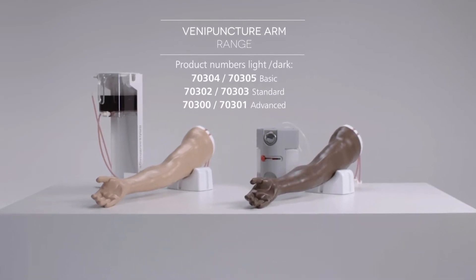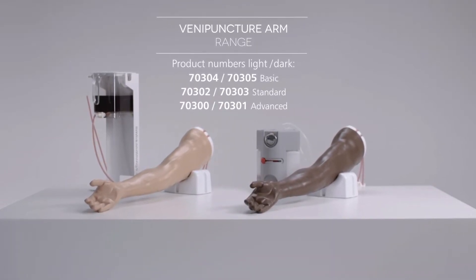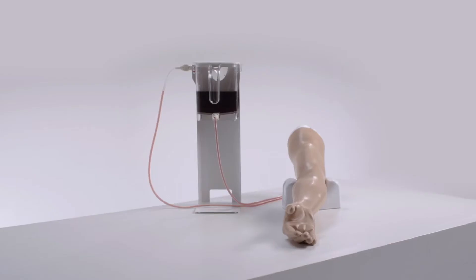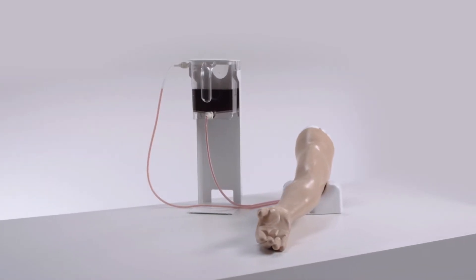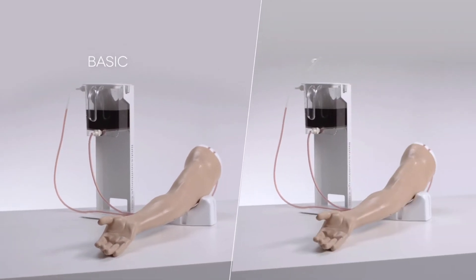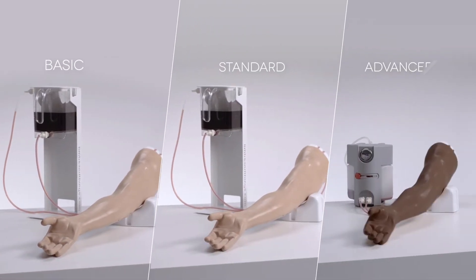This is the Limbs and Things Venipuncture Arm Range. Designed to support all levels of training, it includes basic, standard and advanced venipuncture arms.